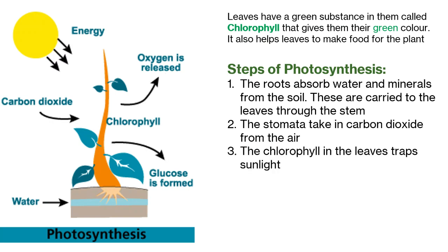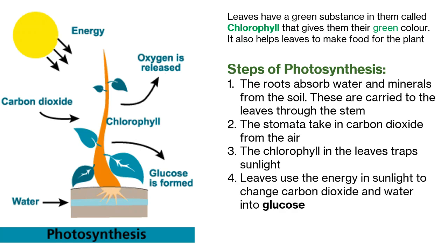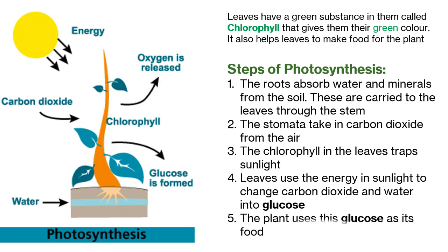The chlorophyll in the leaves traps sunlight. Then, the leaves use the energy in the sunlight to change carbon dioxide and water into something called glucose. The plant uses this glucose as its food.